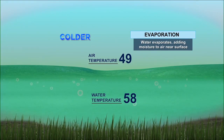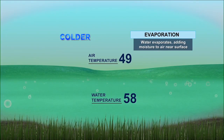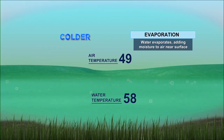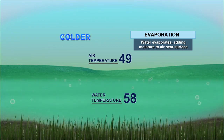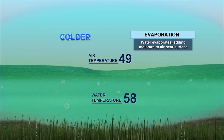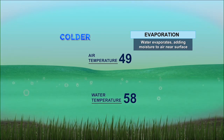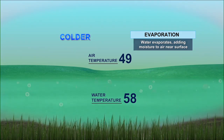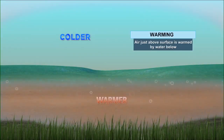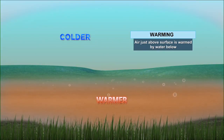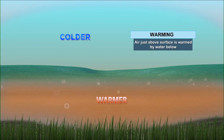Next is evaporation. Water is going to evaporate, adding moisture to the air near the surface. Adding moisture to the air near the surface is going to be common in all the fogs that we'll be talking about.